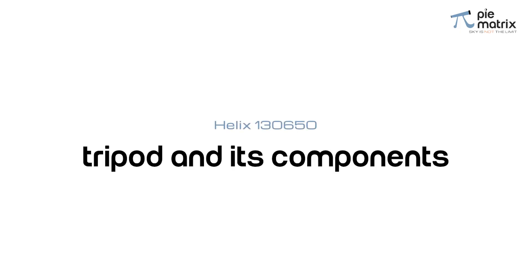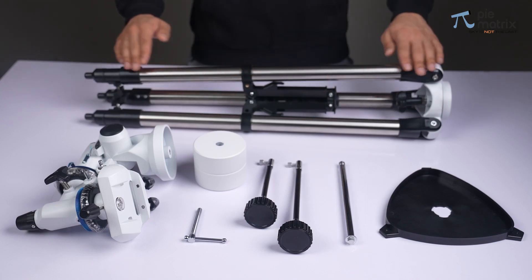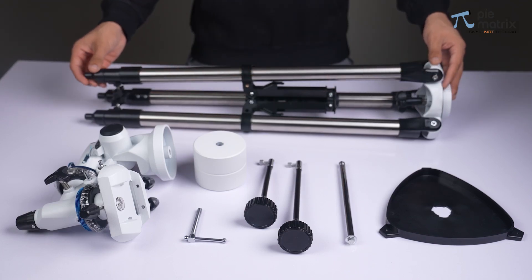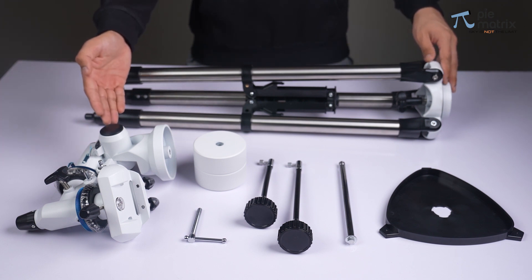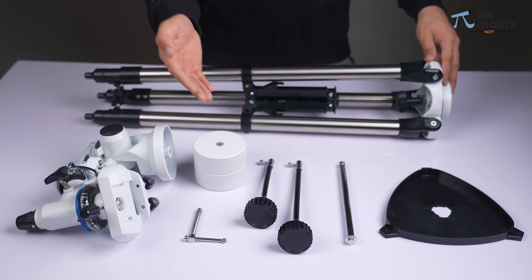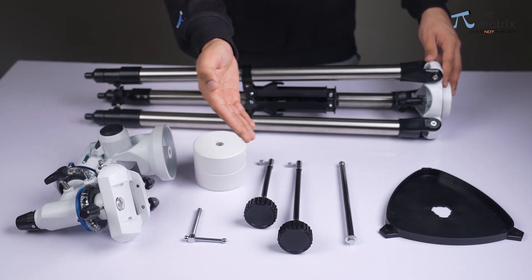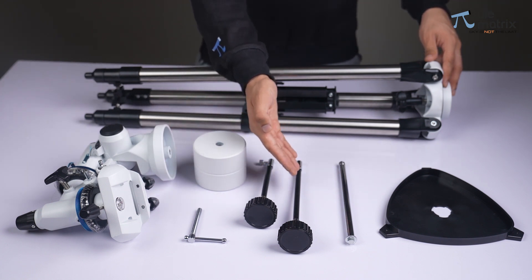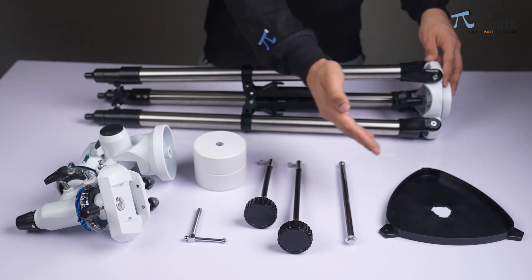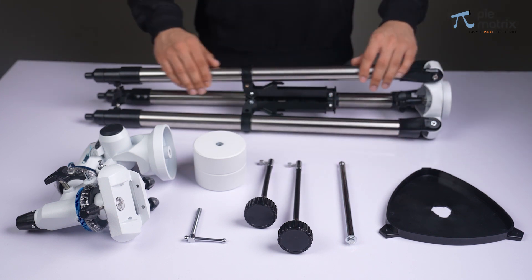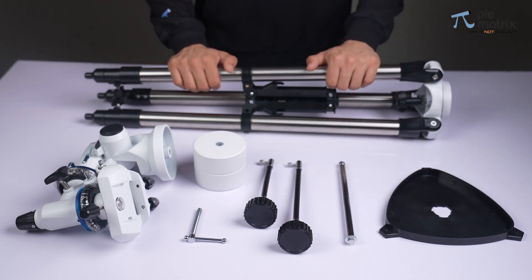Before we dive into the installation process, let's have a closer look at all the components of the tripod assembly. The tripod assembly consists of the EQ3 mount, counterweight, T-bolt, slow motion knobs, rod and accessory tray. This completes our EQ3 mount tripod.